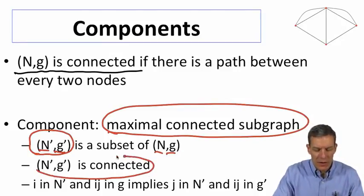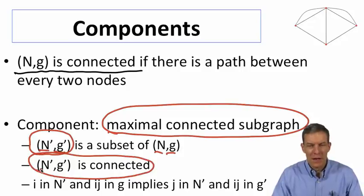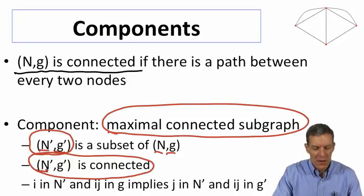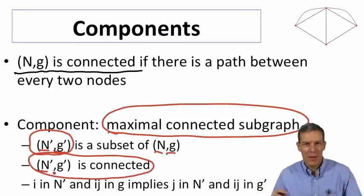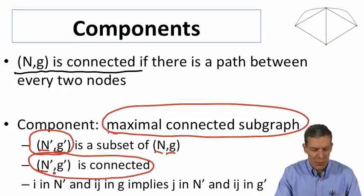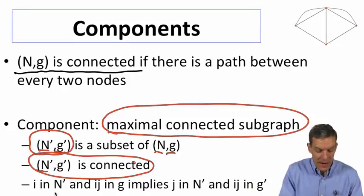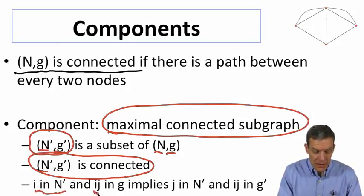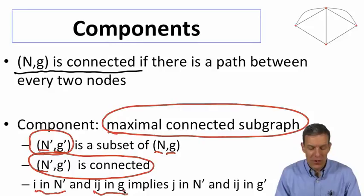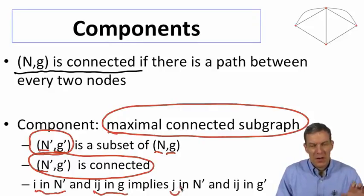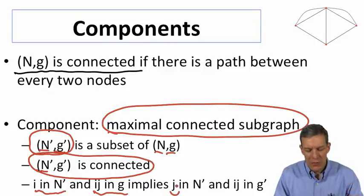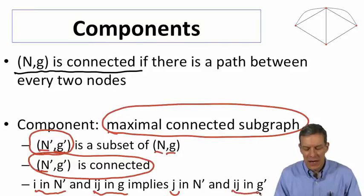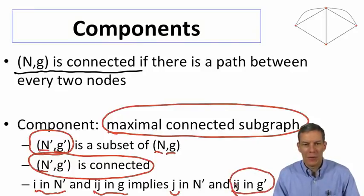We want this to be path connected. So from every node i in n prime and every node j in n prime, there exists a path in G prime connecting those two. So this is a connected subgraph. And if we look at some node who's in n prime and any link in the original network, if there's some node j at the end of it, then ij has to be in G prime as well.